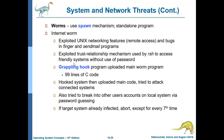Aside from viruses, there are worms. Worms use a spawn mechanism — they replicate themselves just like viruses, crawling their way to infect all reachable parts. An internet worm exploits Unix networking features, remote access vulnerabilities, and bugs in programs like finger and sendmail.